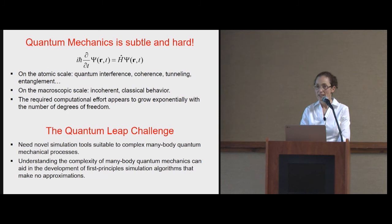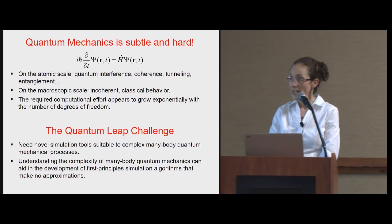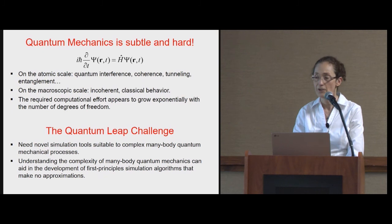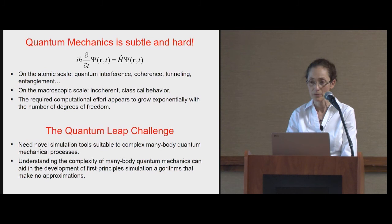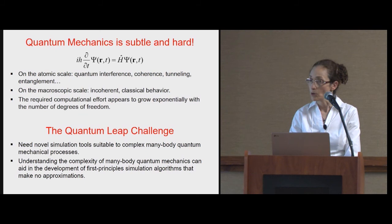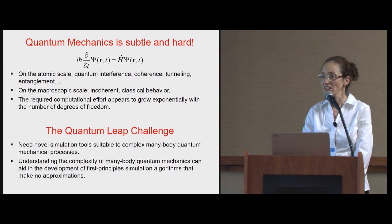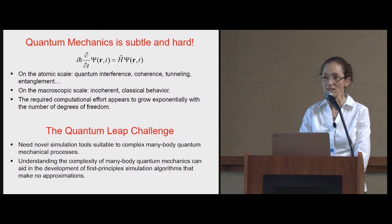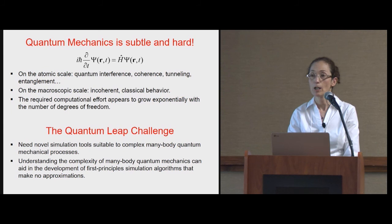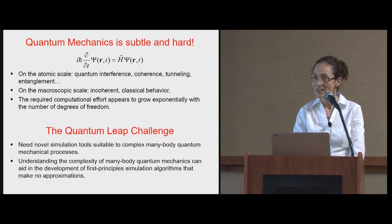If we want to solve the Schrödinger equation to simulate the system, then the computational effort appears to scale exponentially with the number of particles. This appears obvious because you need to get a wave function that's a function of all the coordinates, and obviously you need exponential work to get the exponential information in the many-body wave function. But maybe there are other ways around if you want to target an observable. We need novel simulation tools that avoid this exponential scaling and are applicable to many-body quantum processes.